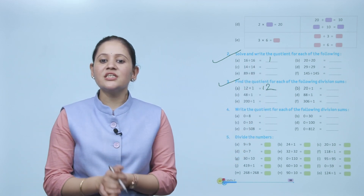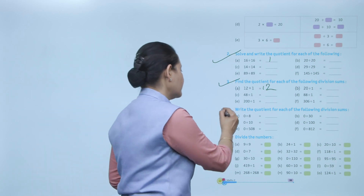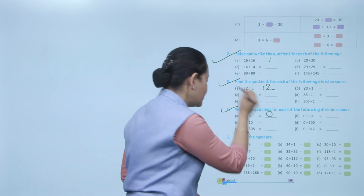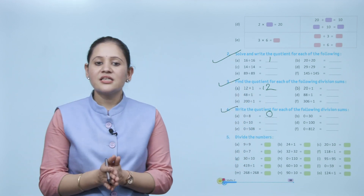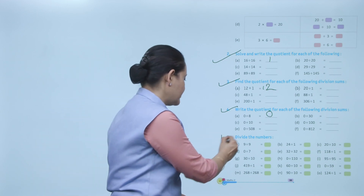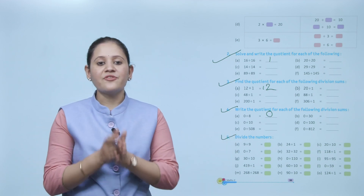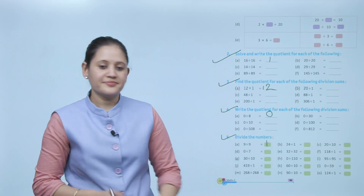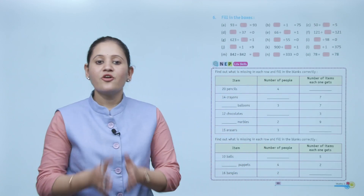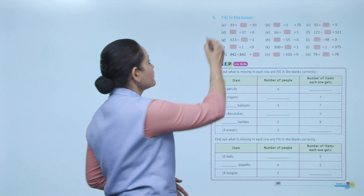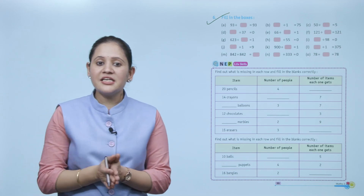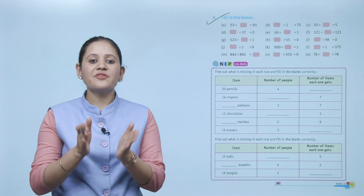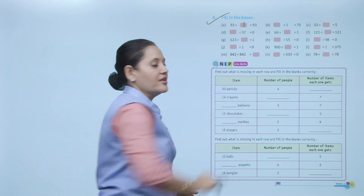Write the quotient for the following: 0 ÷ 8 = 0. Next, 9 ÷ 9 — when a number is divided by the same number, the quotient is always 1. Fill in the boxes: 93 ÷ 1 = 93, so the answer is 1.